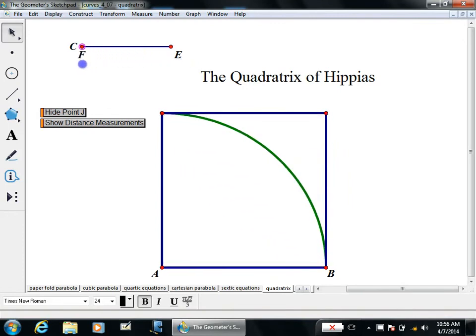That is called a quadratrix and with it I'm able to trisect angles and square circles. So the most important point on the quadratrix is this final point, point J.